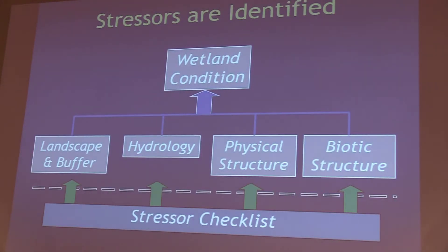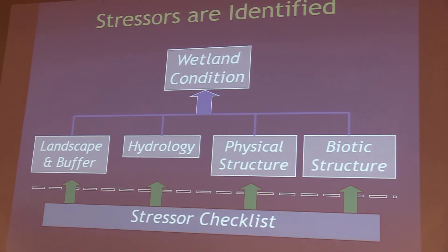In addition to the overall condition score, CRAM also includes a stressor checklist. The purpose is to help identify what might be going wrong in your wetland — why some scores are decreased. It can also be used by practitioners as a predictive tool: they can look at potential stressors and determine which to watch or manage to prevent site condition from decreasing in the future.